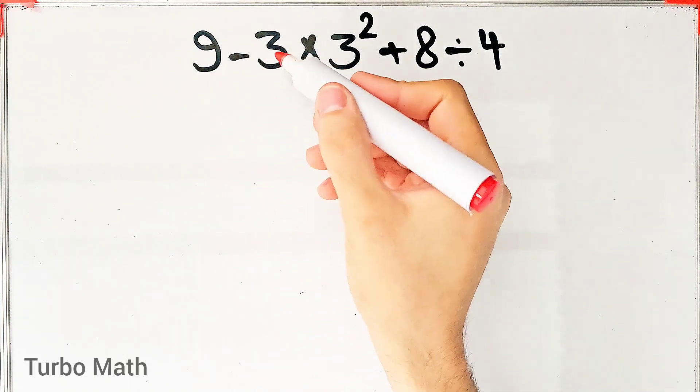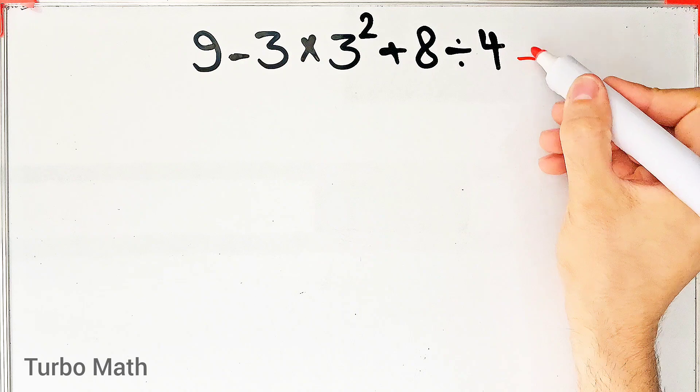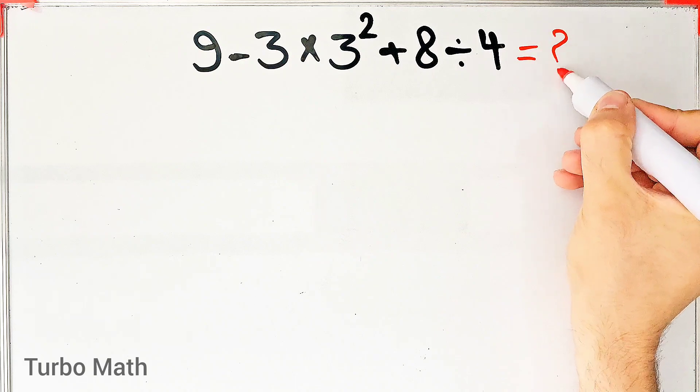9 minus 3 times 3 to the power of 2 plus 8, then divided by 4. What is the answer of this question? Can you solve it?